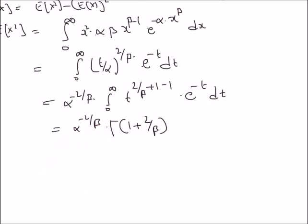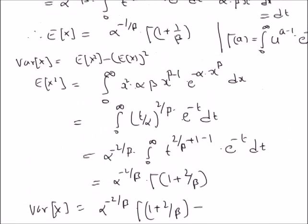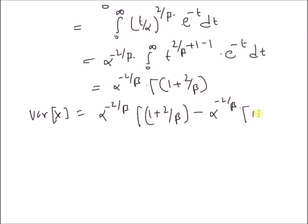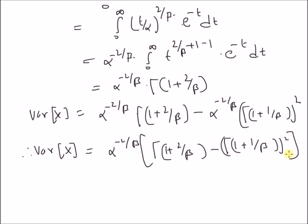Using this result in the definition of variance, variance of x equals alpha^(-2/beta) * Gamma(1 + 2/beta) minus the square of the expectation, which is alpha^(-2/beta) * [Gamma(1 + 1/beta)]^2. Therefore, the variance of a Weibull distributed random variable x is alpha^(-2/beta) * [Gamma(1 + 2/beta) - (Gamma(1 + 1/beta))^2]. This is the variance of a Weibull distributed random variable. Thanks for watching.